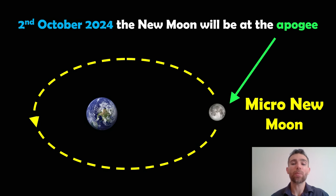The remaining micromoon is going to occur on the 2nd of October, 2024. It's a micro new moon, which means it occurs at the furthest distance. Micromoons occur when the moon is furthest away from the Earth. This new moon will occur at the apogee, and it will appear as one of the smallest new moons we'll get in 2024.